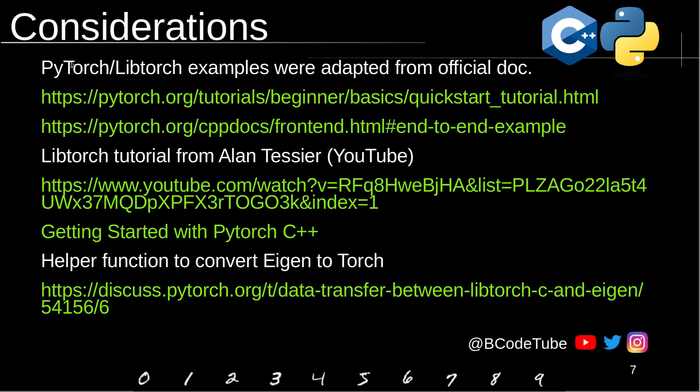Later, when we start using the Torch library, I took an example from the official website. This is the Python example, and this is the C++ example. And if you want more explanation on LibTorch, a good starter tutorial is this one from Alandessia getting started with PyTorch. And later, we are going to see that to convert Eigen data to Torch, there's a little trick that we need to do. And I found it in this discussion in the PyTorch forum.